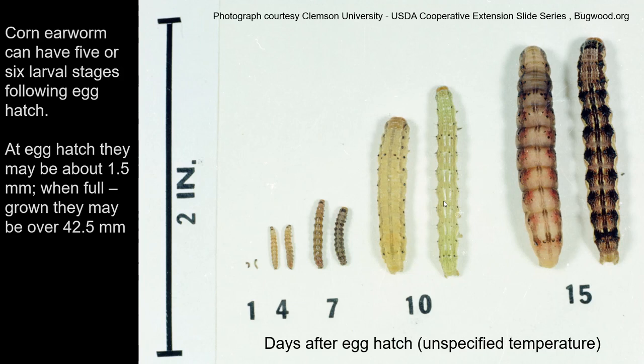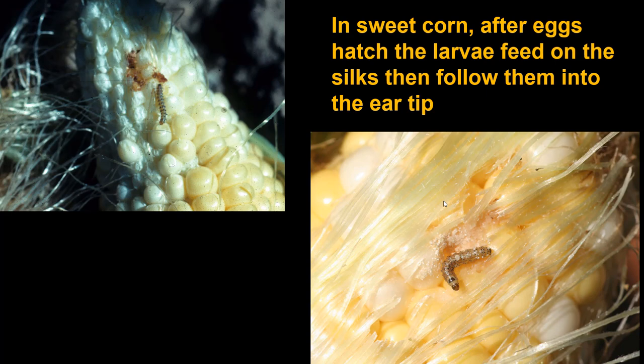When the eggs hatch, they become a small caterpillar, then feed, molt, and grow — typically going through five or six larval stages. The small ones feed very little; the big ones are what do all the damage. The tiny ones, first out of the egg, may be only a millimeter and a half. When fully grown, they might be about 30 times that in length and much greater in body mass.